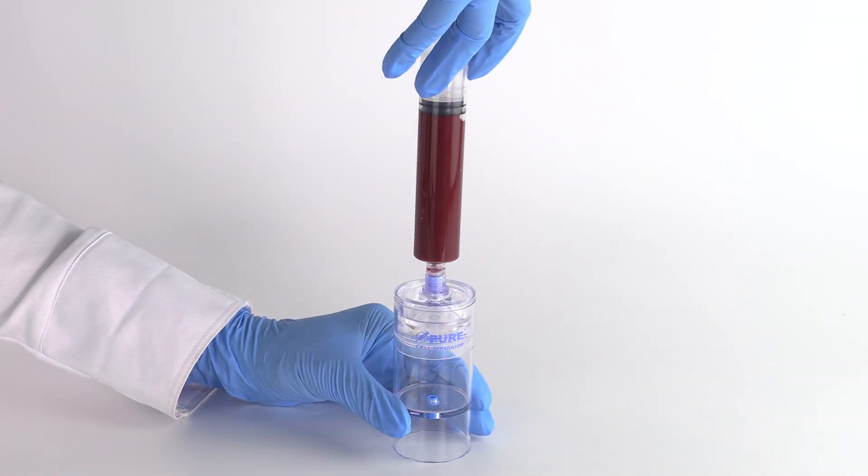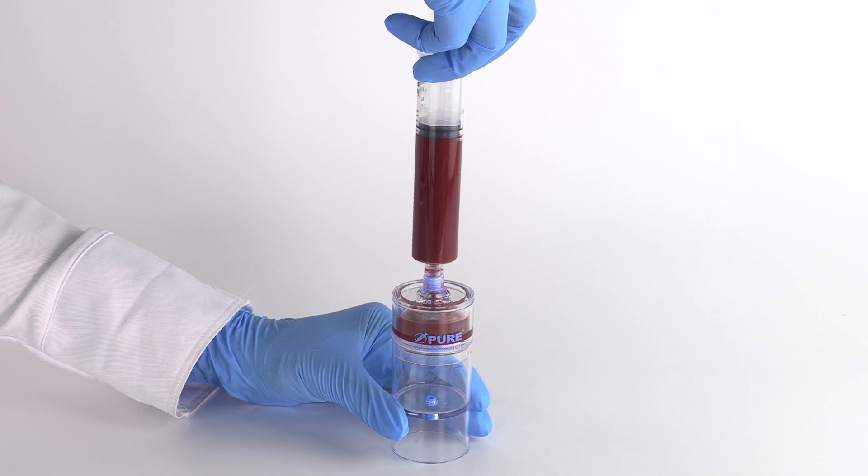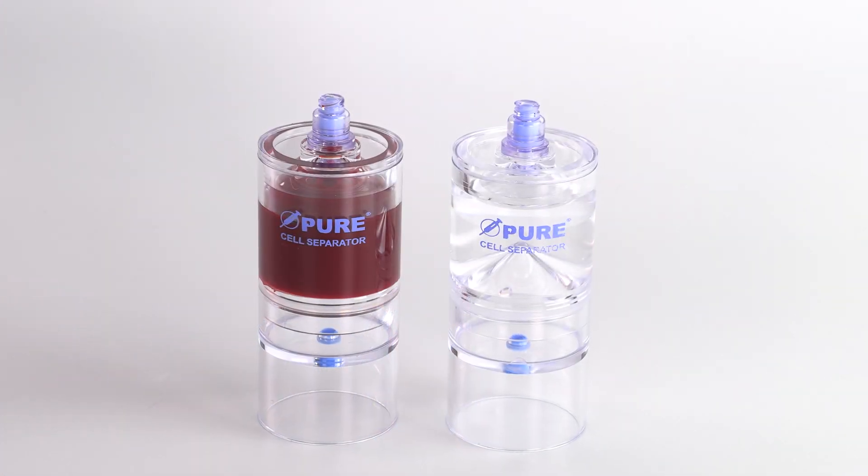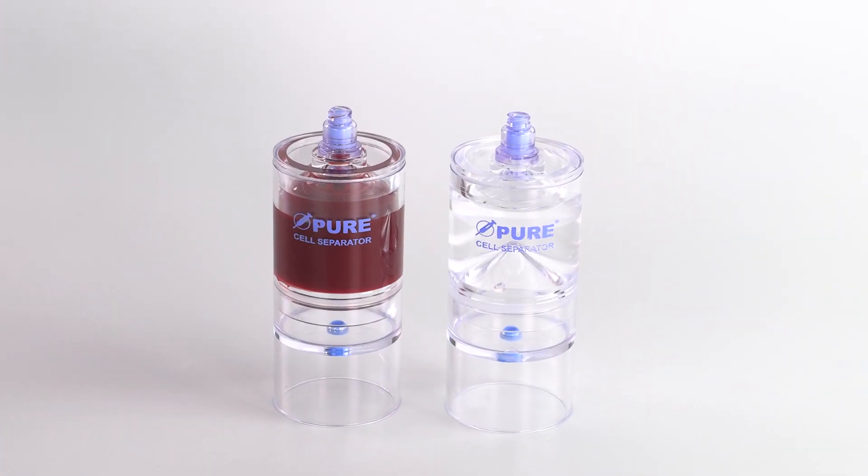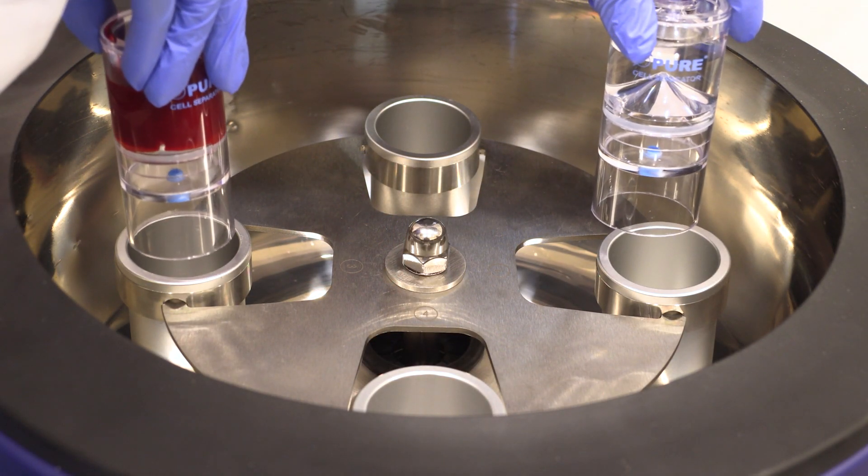Attach the 30 milliliter bone marrow syringe to the needleless port and slowly inject into the separator device. Use the counterbalance device to counterbalance with equal volume. Place both devices in the centrifuge rotor at opposite ends.